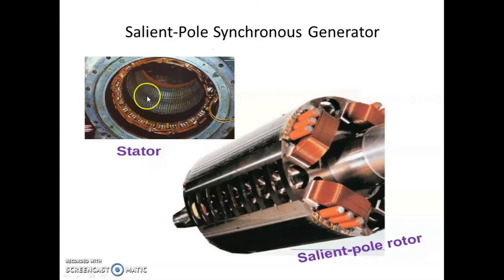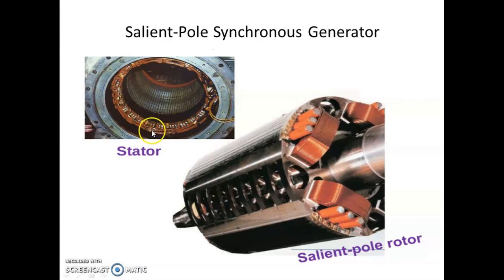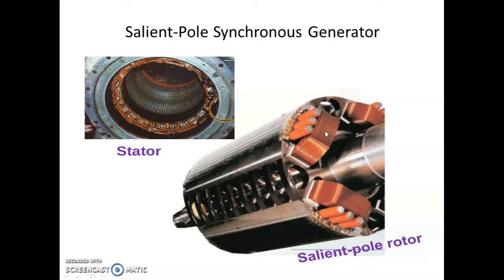Here is the actual picture of the stator — this is how it looks. There are slots inside in which armature winding is placed. This is an example of a salient pole rotor. It may look cylindrical, but if you look closely, this is the shaft and these are the salient poles, which are of protruding type. This is a four-pole machine with four salient poles: one, two, three and four.